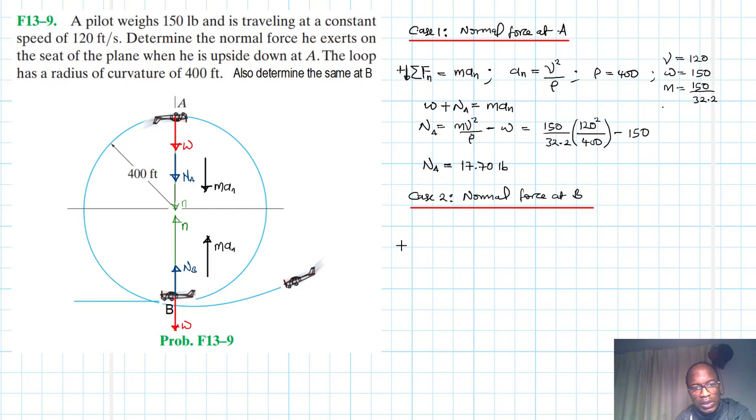Let's apply the equation of motion. We have summation of forces in the N axis going up in our reference. This is equal to m*a_n, where a_n which is our centripetal acceleration is equal to v squared divided by rho. We have N_B minus W equal to m*a_n. Making N_B subject of the formula, this gives us m*v squared divided by rho plus W.